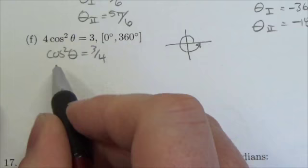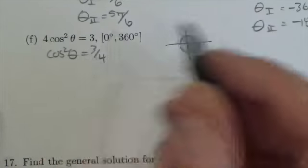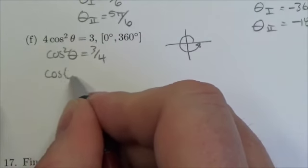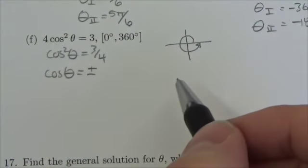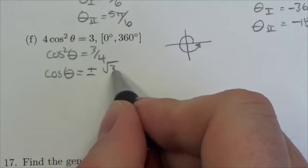I'm just going to divide by 4, and then to get rid of that square I'm just going to take the square root of both sides. All I've got to remember is that that spits out a positive or a negative here.